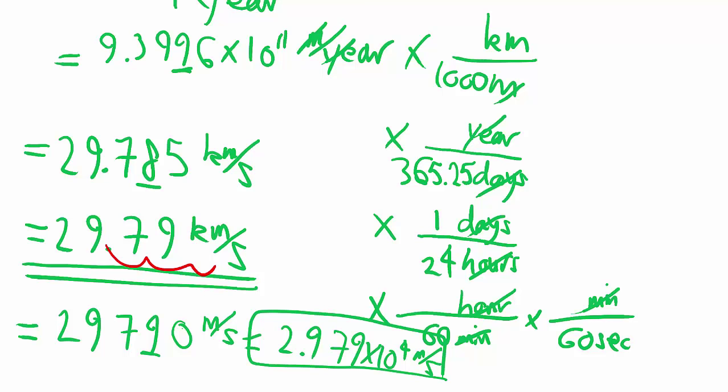So there you have it, at any given second, you're zipping around the sun at above 30,000 meters. Every second.